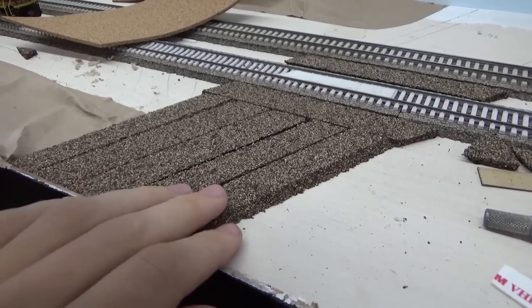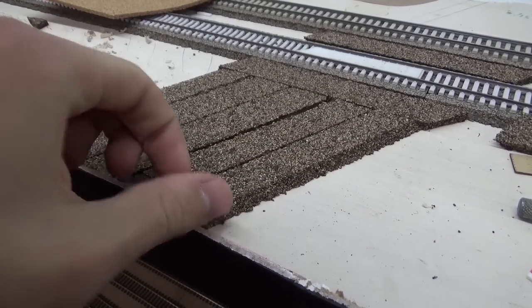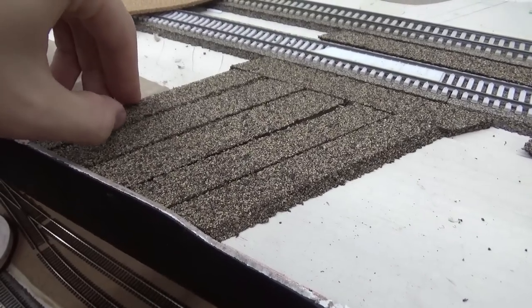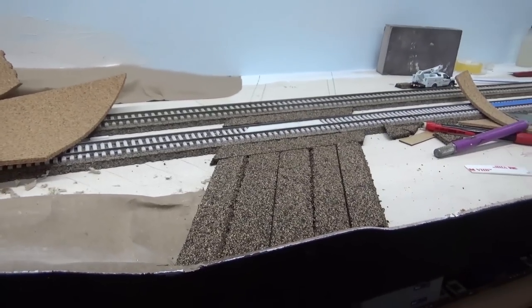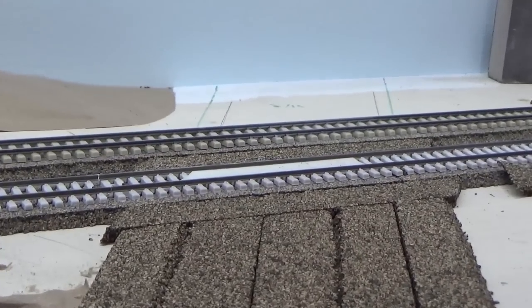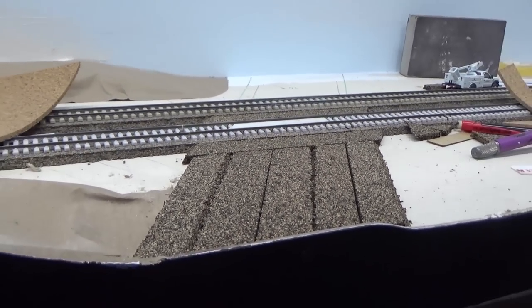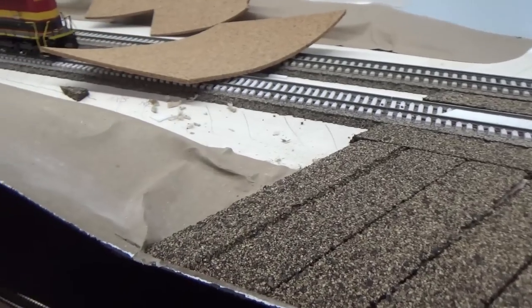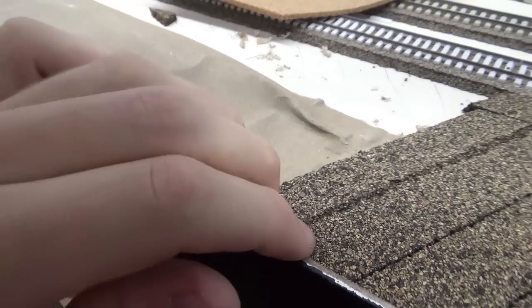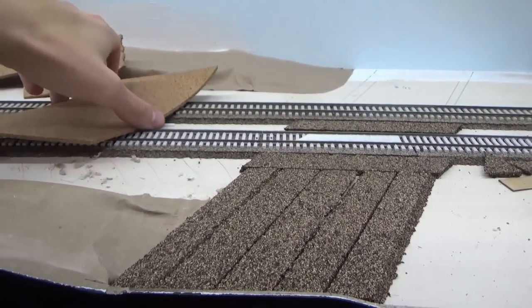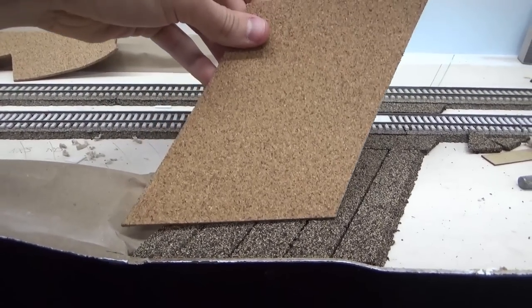The first thing I had to do was lay a base for the road because the tracks themselves are up on some cork. I decided that some HO scale cork cut into sections, and then a section of N-scale cork on top of that, would get me close to rail height, which is really what I was aiming for.